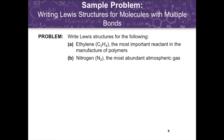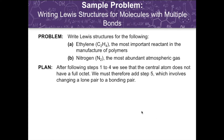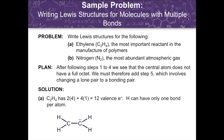Let's look at some examples. Write the Lewis structures of ethylene, the most important reactant in the manufacture of polymers, and nitrogen, the most abundant atmospheric gas. Following the 4 steps discussed earlier, we arrive at an initial structure for ethylene. We then change a lone pair to a bonding pair — the right carbon has an octet, but the left carbon has only 6 electrons. So we move the lone pair on the right carbon to form another bonding pair between the two carbon atoms, giving each carbon an octet via a double bond.